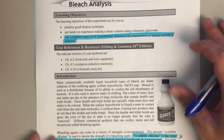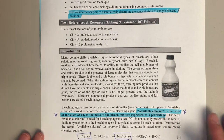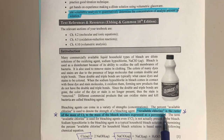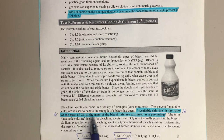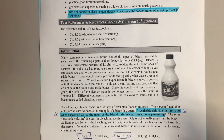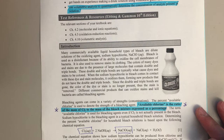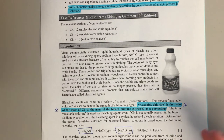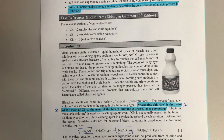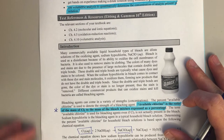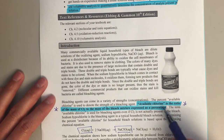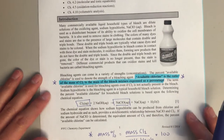If we keep reading in our lab manual, it says: available chlorine is the ratio of the mass of Cl2 to the mass of bleach mixture, expressed as a percentage. These words are really confusing — it took me quite a while this morning to go through this. I definitely feel the frustration you might have, but we do need to work together and get into it.